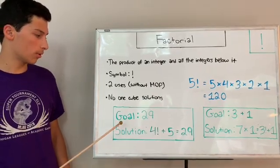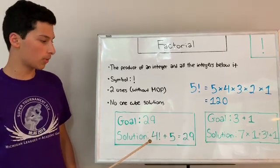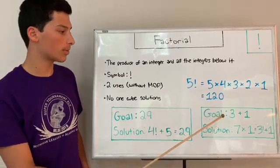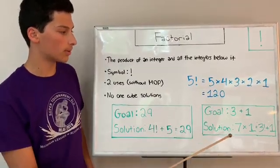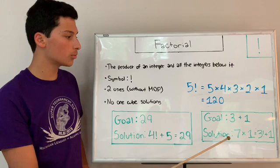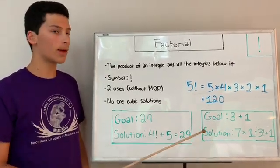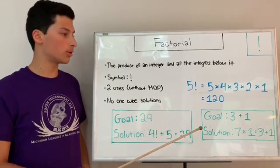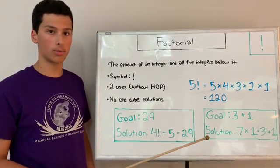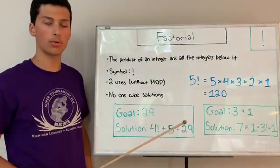If you look in this first example here, the goal is 29, and what the solution writer did was they did 4 factorial, which is 24, plus 5 equals to 29. In the other example here, the goal is 3 plus 1, and the person wrote 7 times 1 equals 3 factorial plus 1. As you can see, the solution writer interpreted the goal differently than how it was originally written. You're allowed to interpret the goal however you'd like, so you can interpret it as 3 plus 1, which is 4, or you can look at it as 3 factorial, which is 6 plus 1 equals 7. The solution writer in this example did 7 times 1 and interpreted it with the factorial.